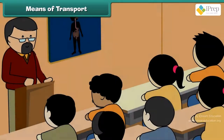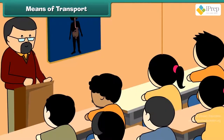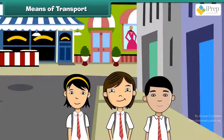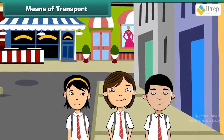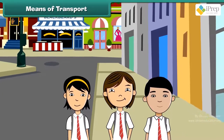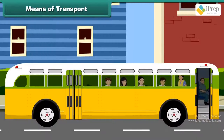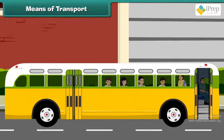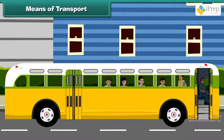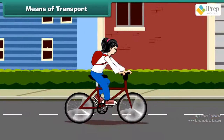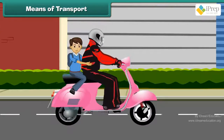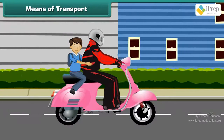Students use different means of transport. Students who live near the school go there on foot. Students who live far from the school use other means of transport. Some come to school on bicycle and others on scooter or car.